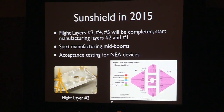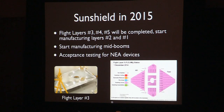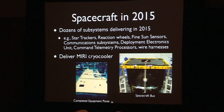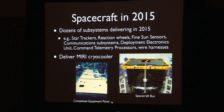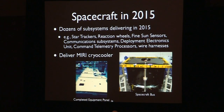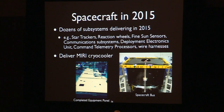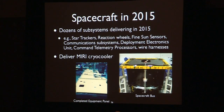In the sunshield area, they'll be completing the flight layers three, four, and five — layer three is already completed — and starting manufacturing of the final two flight layers. The mid-booms, the structures that pull the sunshield out, will begin flight manufacturing; they already have engineering units. Acceptance testing on all non-explosive actuator devices will occur, as Mark will describe. In the spacecraft, a lot of hardware is coming together all through 2015, and the Miri cryocooler will be completed. Here you see the spacecraft bus with one of the equipment panels that hold electronics boxes.